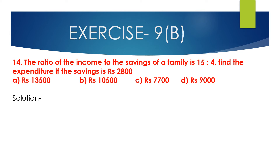Now we will solve question number 14. The ratio of the income to the savings of a family is 15 is to 4. Find the expenditure if the saving is 2800 rupees. The options are 13500 rupees, 10500 rupees, 7700 rupees, and 9000 rupees.